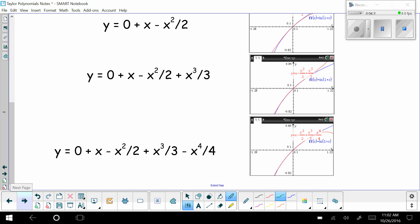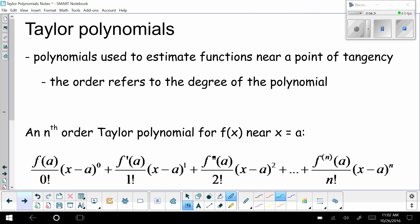The idea of making polynomials to estimate functions is what's called a Taylor polynomial. And these are polynomials that are used to estimate functions near a point of tangency. And when we talk about Taylor polynomials, we refer to them by an order. So like a first order, second order, third order, and so on. And the order refers to the degree of our Taylor polynomial.